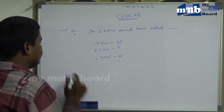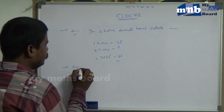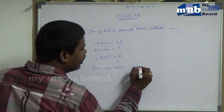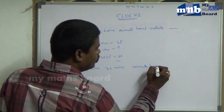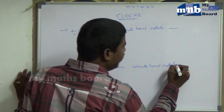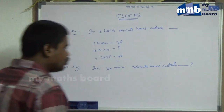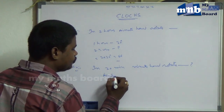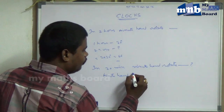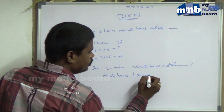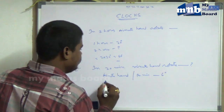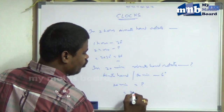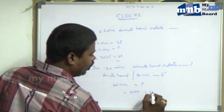Next example: in 20 minutes, how much angle does the minute hand rotate? According to our theory, the minute hand per minute is 6 degrees. We want 20 minutes — so 20 into 6 is 120 degrees.